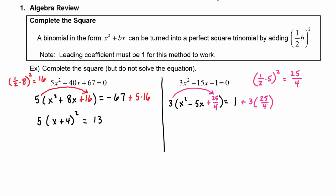To keep our equation balanced, simplifying gives us 3 times x minus 5 halves squared is equal to — on the right-hand side, 3 times 25 fourths is 75 fourths, and 75 fourths plus 4 fourths is 79 fourths. So we've rewritten the equation by completing the square.